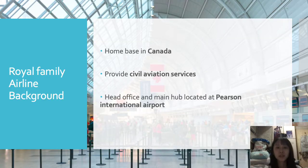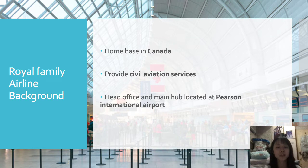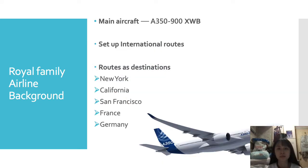Let me introduce the background of the airline first. Royal Family Airline is the first airline in Canada to provide silver aviation services, with its main hub located at Pearson International Airport. The main aircraft used in my aviation fleet is the A350-900XWB. On the route, my airline chooses to set up international routes, so the plane's route will cross the Canadian border.